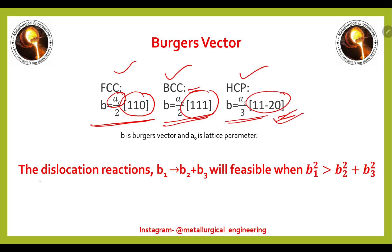A dislocation reaction where high energy cannot proceed will break into two Burgers vectors. The reaction b₁ → b₂ + b₃ is feasible only when b₁² > b₂² + b₃². Now we will see how the Burgers vector of FCC can be shown in the unit cell.